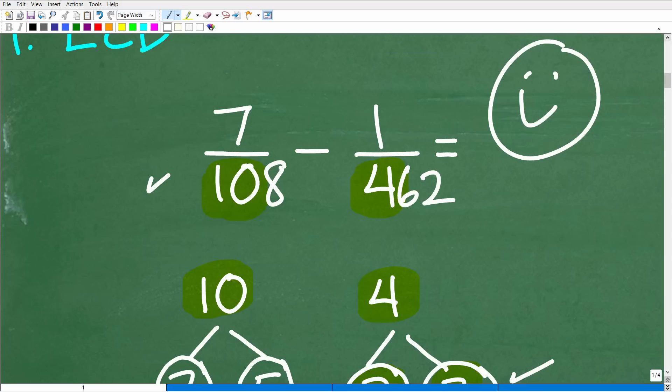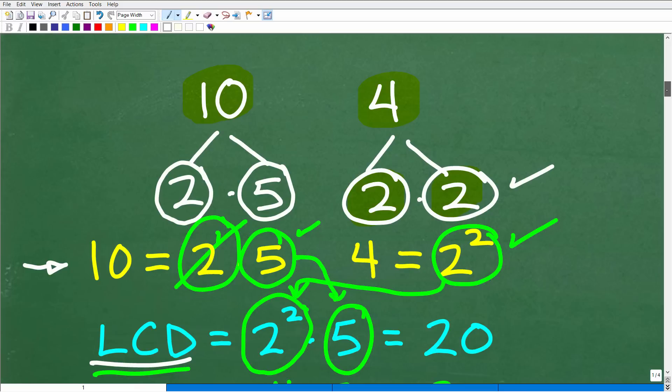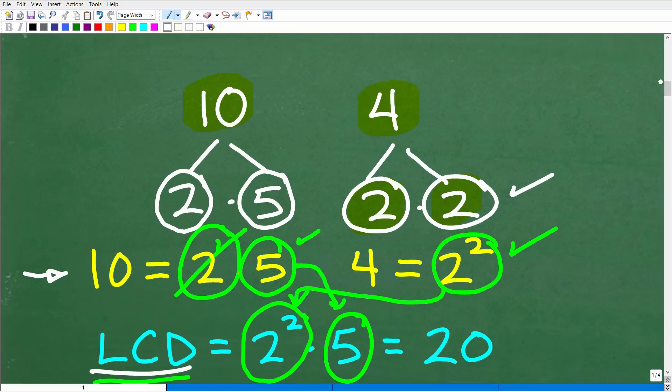But what if I made this problem 7 over 108 minus 1 over 462? Now to find the LCD there, a lot of you wouldn't have happy faces. You might be like, forget this video, I'm not doing this, I'll just use my calculator. Listen, you're going to have to be able to do problems like that as well. That's why it's important to understand the procedure to find the LCD.